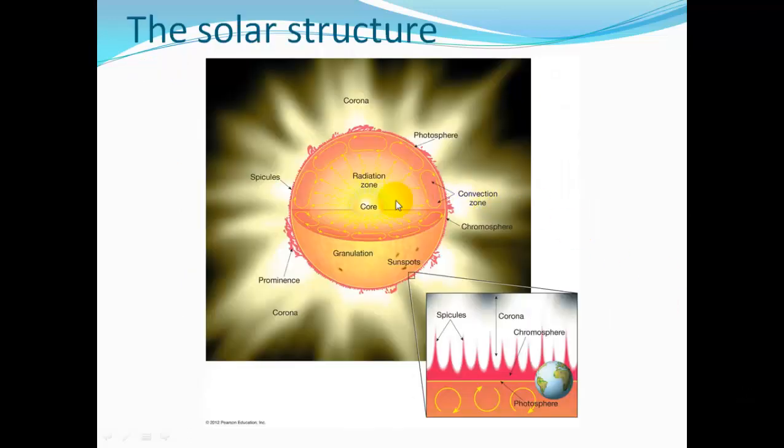Here's our structure of the sun. We have our core and our radiation zone. Here's our photosphere. We have little spicules coming out, and prominences that erupt. This is granulation. Dark spots are the sunspots.